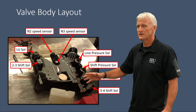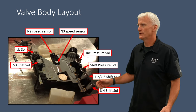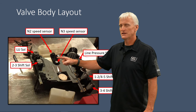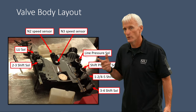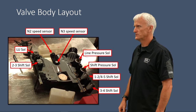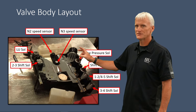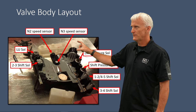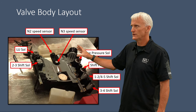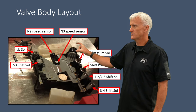This image shows the conductor plate — the electrical component that sits on top of the valve body. In the middle we have the two speed sensors, the input shaft speed sensors N2 and N3. The N1 speed sensor is actually the crankshaft position sensor, an engine component. Here is our pass-through connector, which allows us to connect the vehicle harness. There's a little adapter that fits in between the outside world and the inside of the transmission.